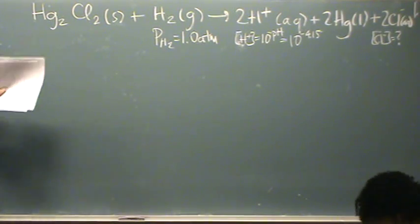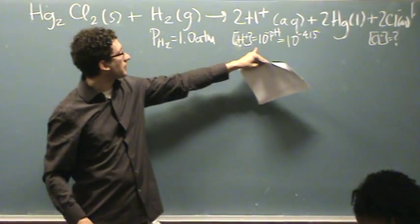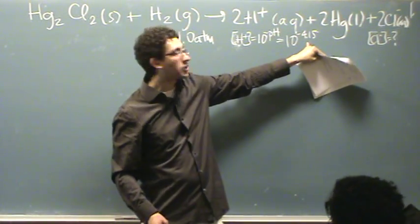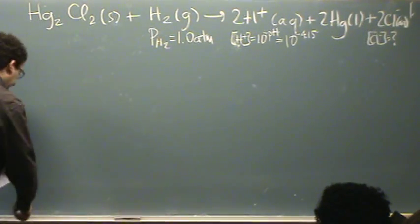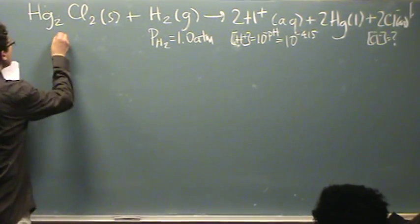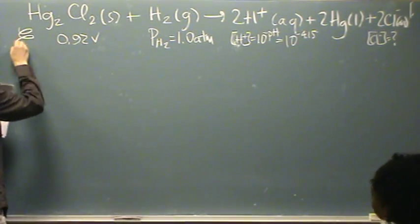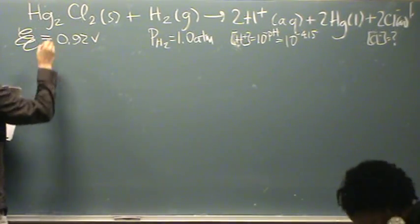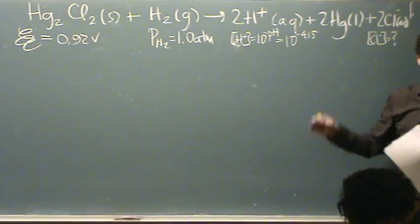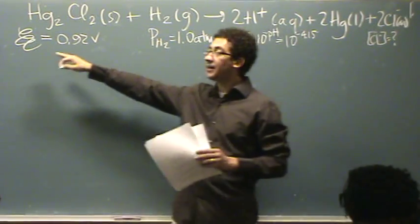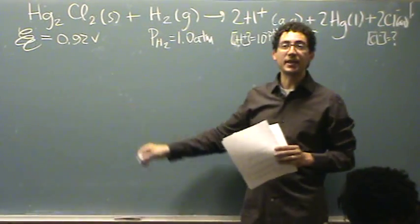Alright, so I've got partial pressure of hydrogen, I've got the concentration of H+ from pH and I want to know that concentration. And I'm given a measured voltage of 0.92 volts. What is that? That's my potential, E squiggly. It's not the standard. You don't measure standards in lab, you measure the non-standards. Now this can also be calculated theoretically, but in this case it's measured.